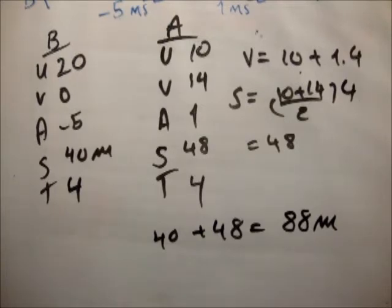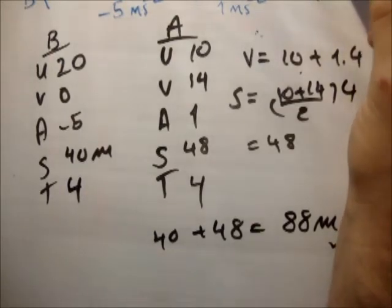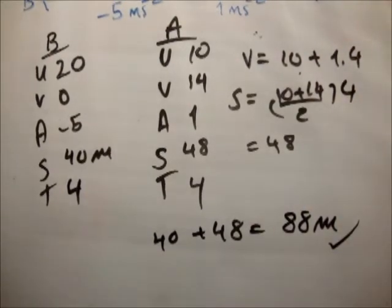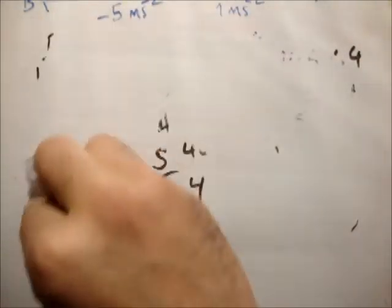So after 4 seconds, they will be 40 plus 48 meters apart. So they will be 88 meters apart. It'll take 4 seconds for car B to come to rest, and after that 4 seconds, they will be 88 meters apart. Let's check that at the back of the book. That is correct.